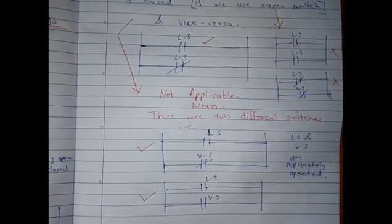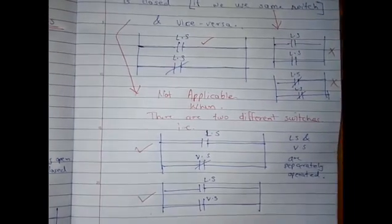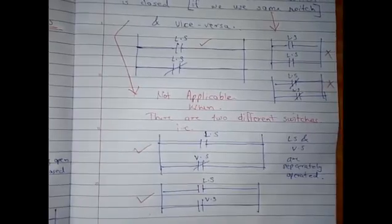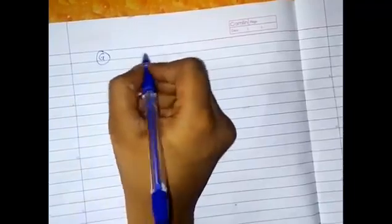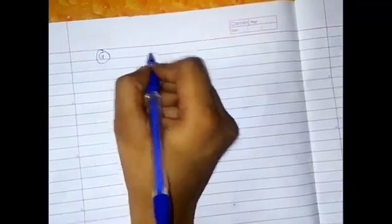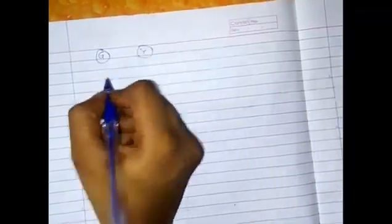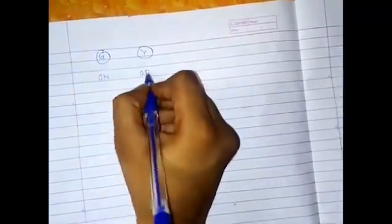Now we will see three examples to clear our basic concepts. Let's take a simple example. This is a green light and this is a yellow light, with an on condition and an off condition.